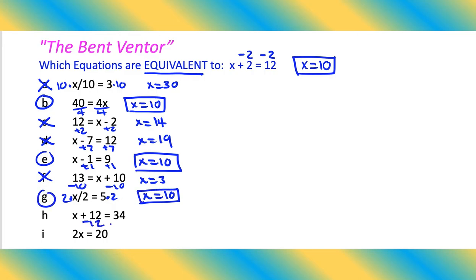Ooh, we would minus 12, minus 12, x equals 22, so nope.